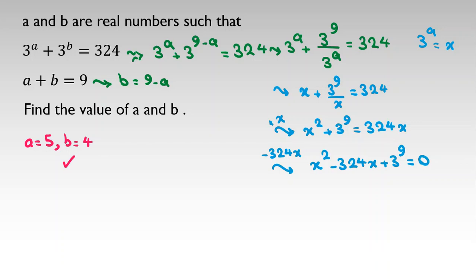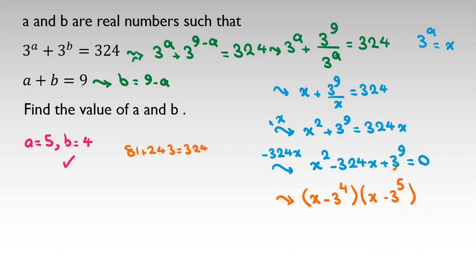We can use the quadratic formula, but let's try to factorize. We need two numbers that multiply to 3 to the 9 and sum to 324. If we place 3 to the 4 and 3 to the 5: their product is 3 to the 9, and their sum is 81 plus 243 which equals 324. So we have (x minus 3 to the 4)(x minus 3 to the 5) equals 0.